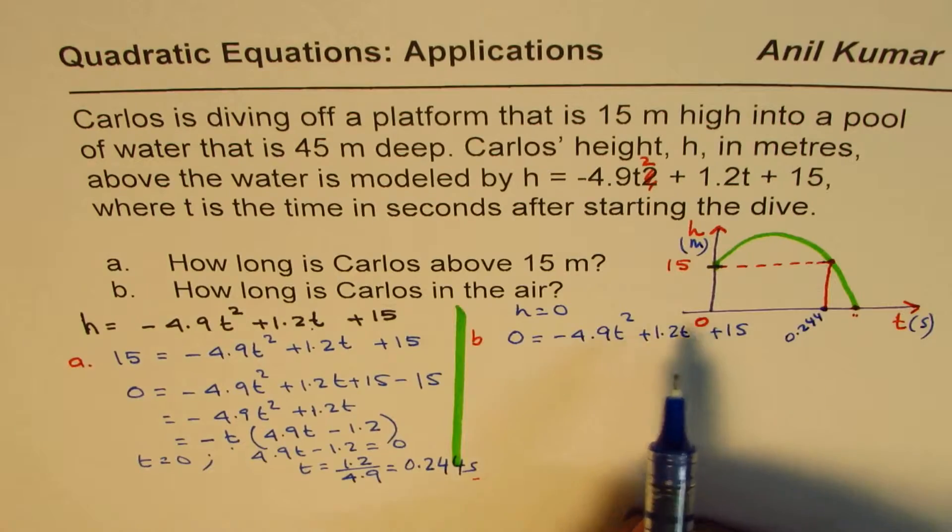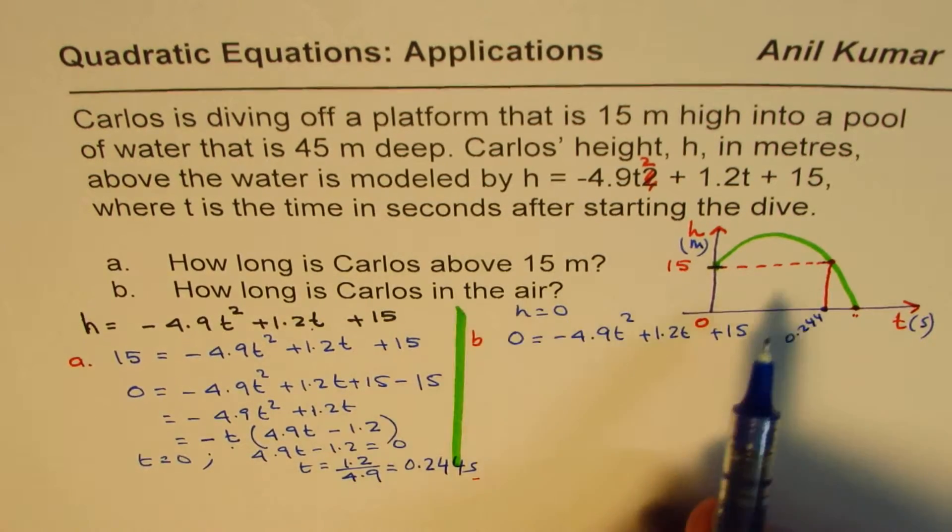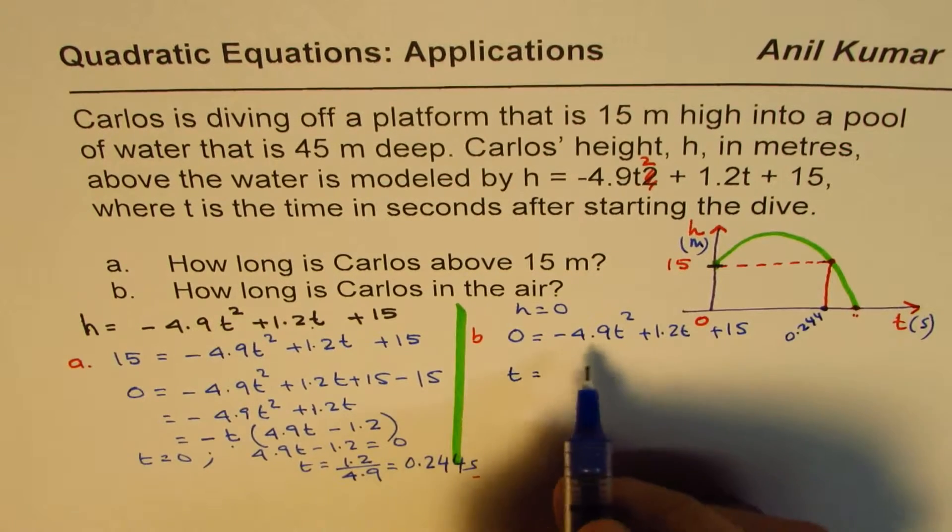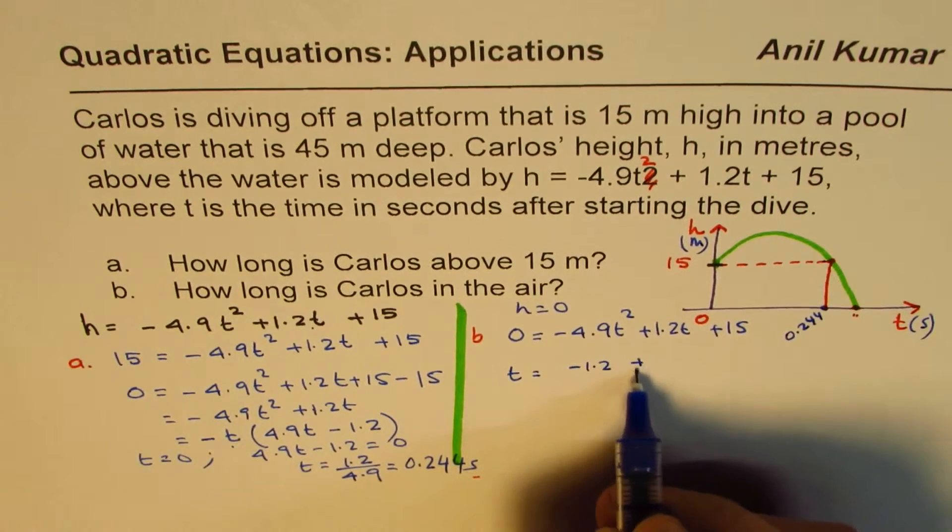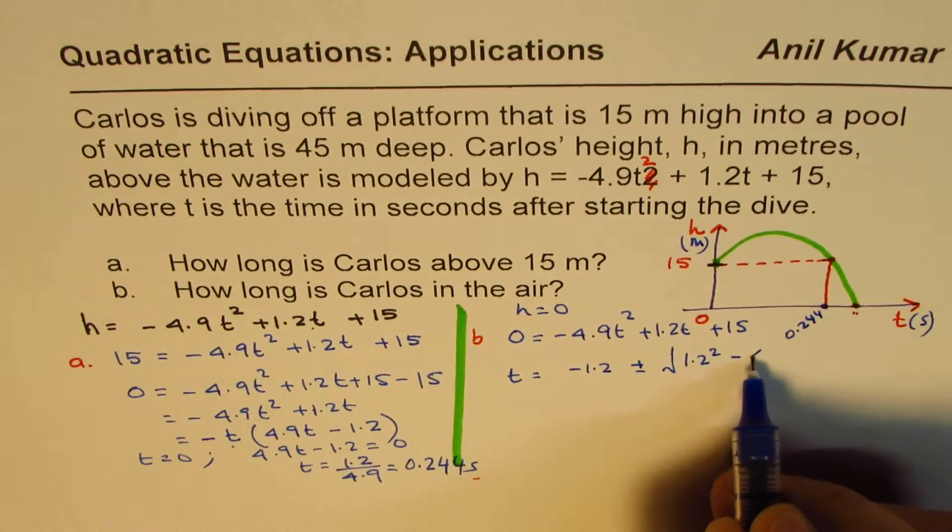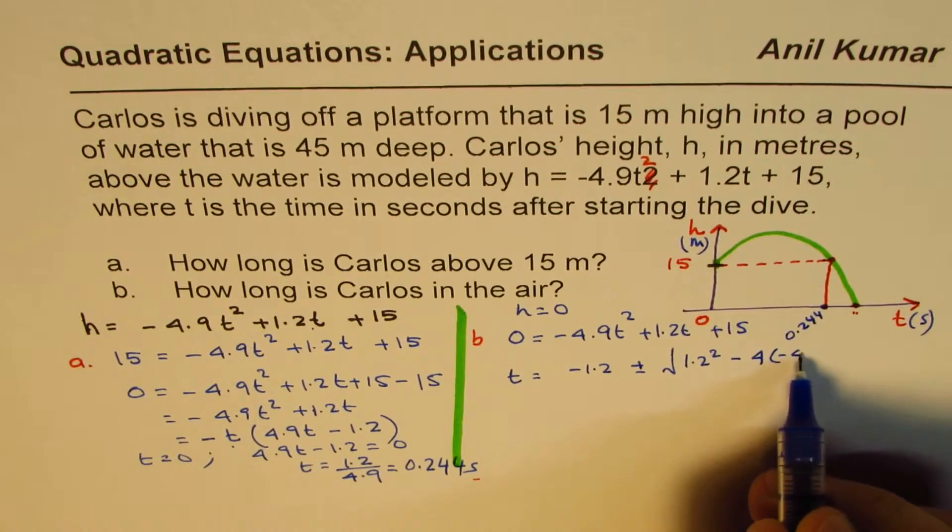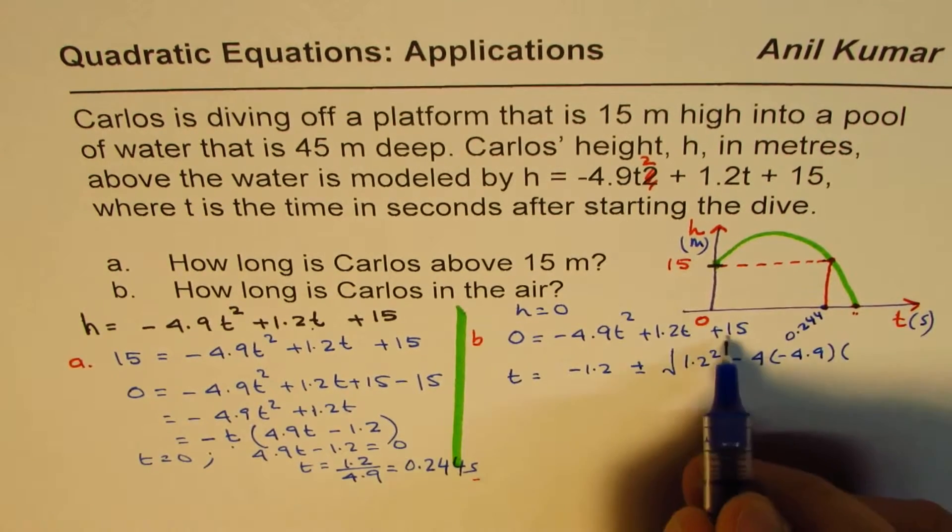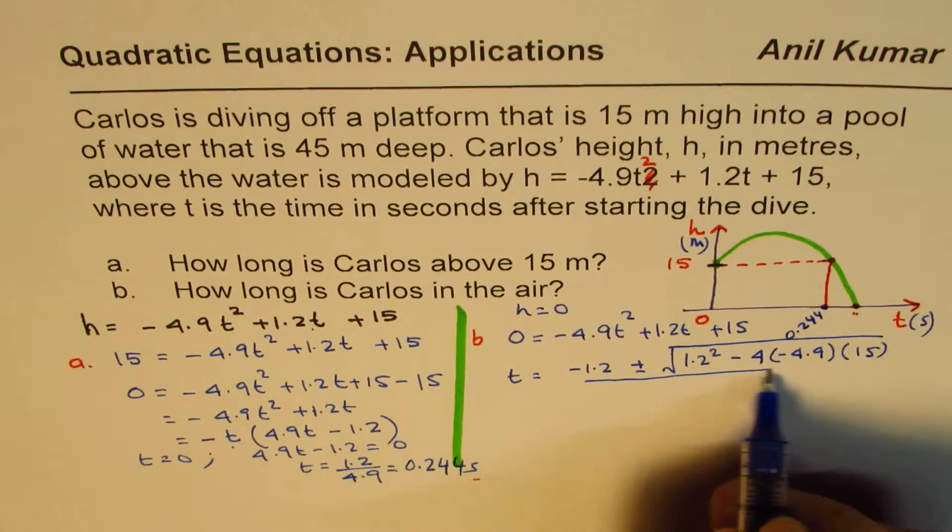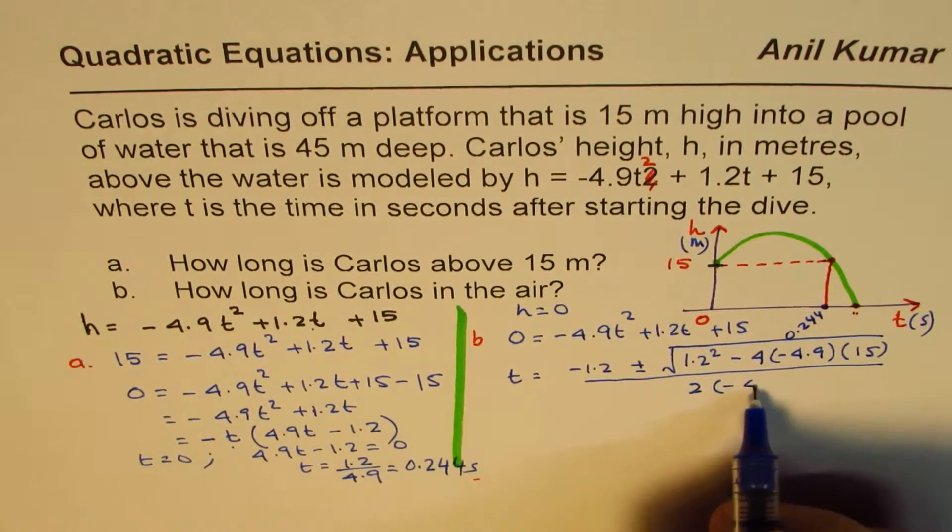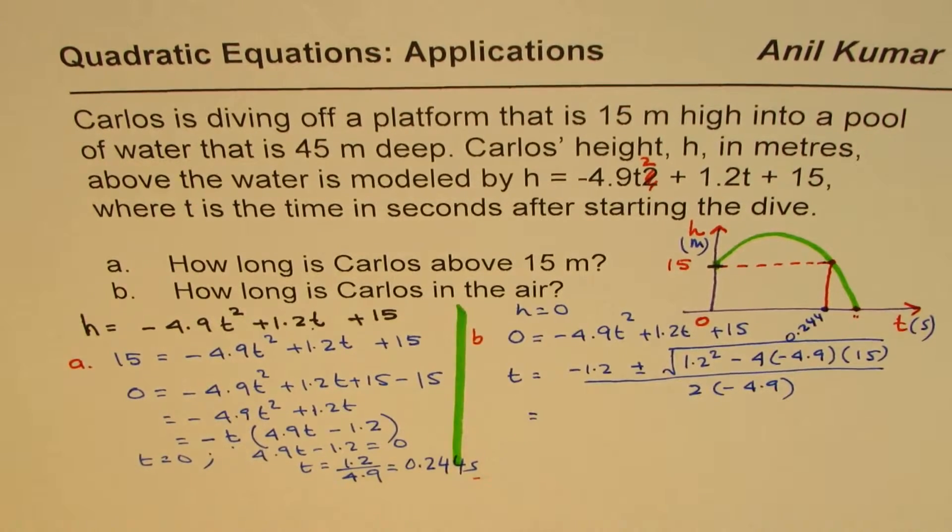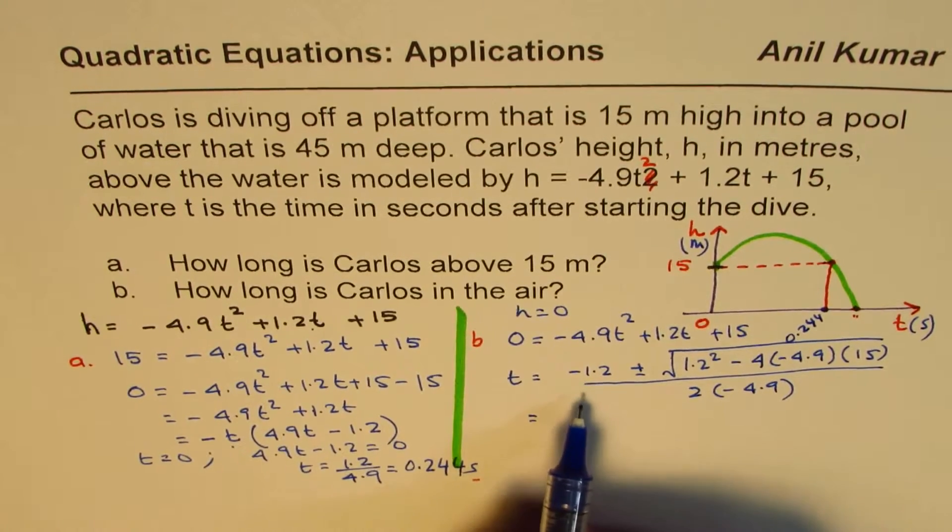Now the second one will give you how long Carlos is in the air. That's a quadratic equation. You can apply the quadratic formula. So t equals minus b, which is minus 1.2 plus minus b squared, that means 1.2 squared minus 4 times a, a is minus 4.9 times c, which is 15. Once you solve this quadratic equation, divided by 2 times a, a is minus 4.9, you get your time t.